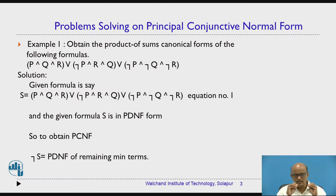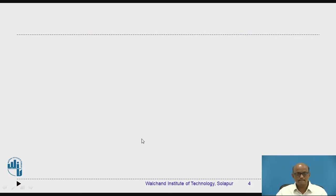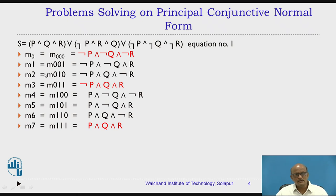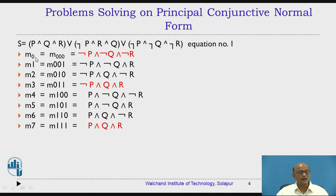Looking at the table, the eight minterms M0 to M7 are indicated. Out of these, the ones marked in red are used in formula S: negation P and negation Q and negation R (the third term), negation P and Q and R (the second term), and P and Q and R (the first term). So M0, M3, and M7 are used in S, forming the PDNF as a summation of M0, M3, and M7.